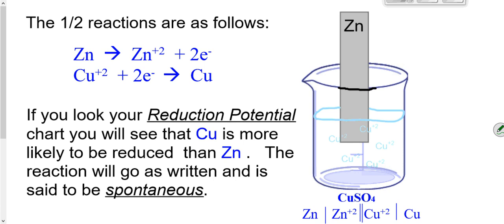So our two half reactions for this scenario would look like this: zinc is oxidized, losing two electrons, and copper gains two electrons and is reduced.